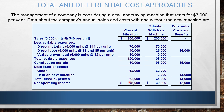We have what we call the total and differential cost approach. The total approach requires constructing two contribution-format income statements — starting with sales, less variable expenses (direct materials, direct labor, variable overhead) to get contribution margin, then less fixed expenses to get net operating income — one for each alternative. The difference between the two net incomes is the differential benefit, for example 12,000 here.